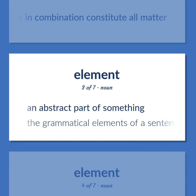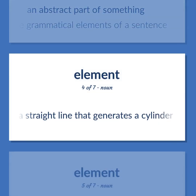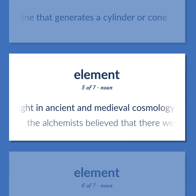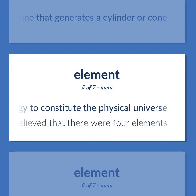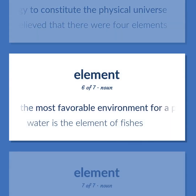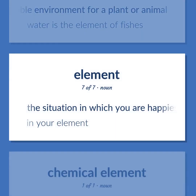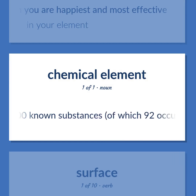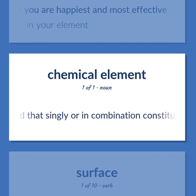Element (abstract): an abstract part of something — the grammatical elements of a sentence. Element (geometry): a straight line that generates a cylinder or cone. Element (cosmology): one of four substances thought in ancient and medieval cosmology to constitute the physical universe — 'the alchemists believed that there were four elements.' Element (ecology): the most favorable environment for a plant or animal — 'water is the element of fishes.' Element (idiom): the situation in which you are happiest and most effective — 'in your element.' Element (chemistry, repeated): any of the more than 100 known substances that cannot be separated into simpler substances.